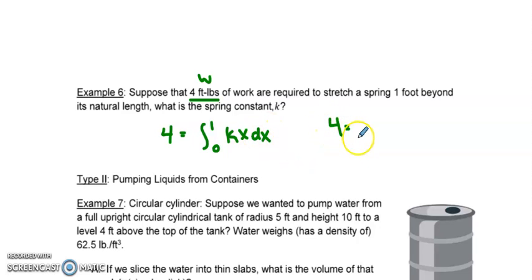So on the left, I just have four. And on the right, I'll have kx squared over two from zero to one, which means that four equals basically k over two. And our spring constant is eight.